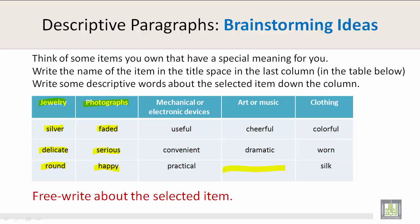These are all ways to describe. Under mechanical or electronic devices we have useful, convenient, and practical. Under clothing we have colorful, worn, and silk. Under art or music we have cheerful, dramatic, and a word you should choose.